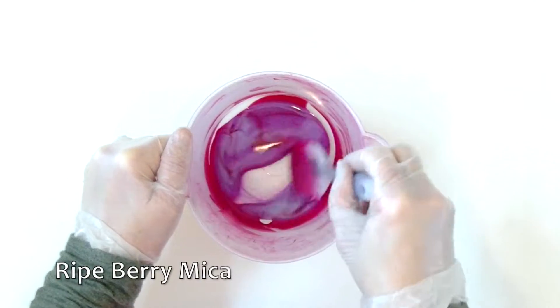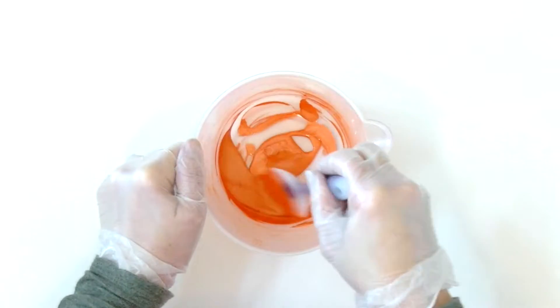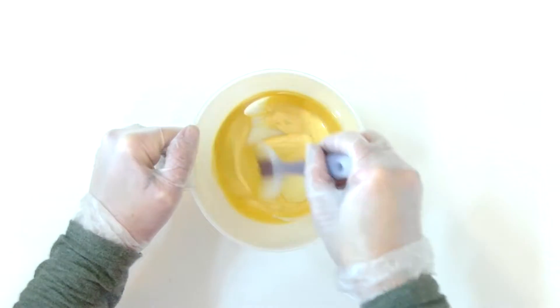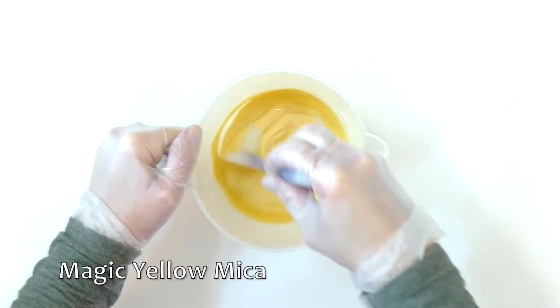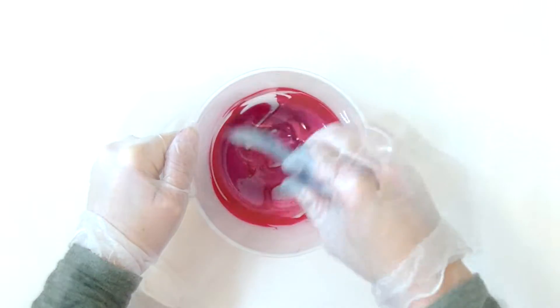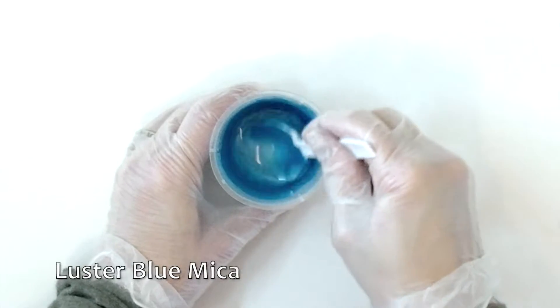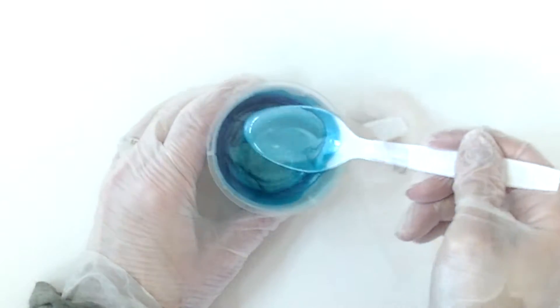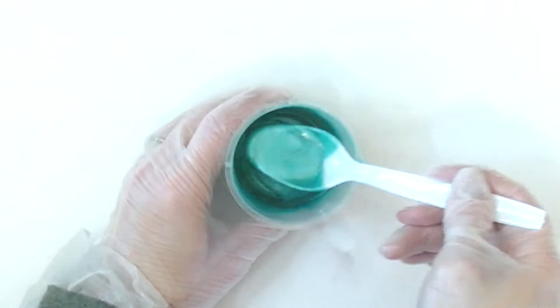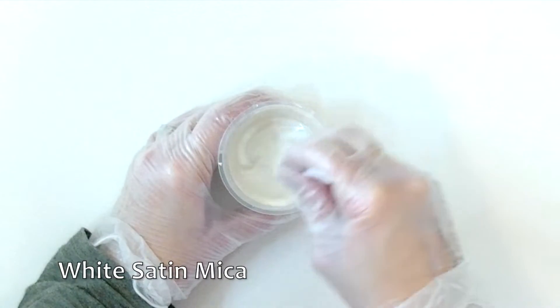I'm using ripe berry mica, orange yellow mica, magic yellow mica, and glamour pink mica mixed in soap in just oil. I mix luster blue mica and aqua green mica and white satin mica for the base.